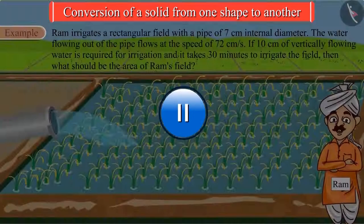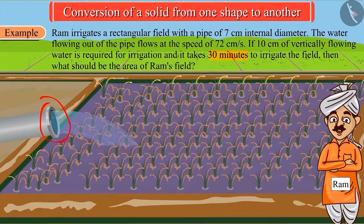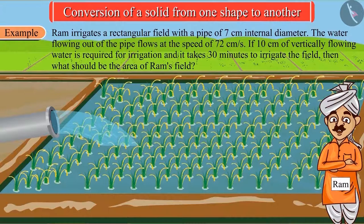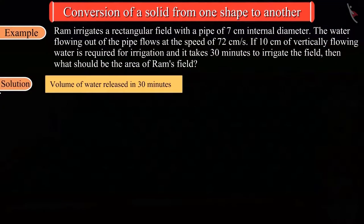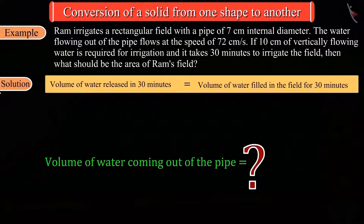We know that the pipe fills the field in 30 minutes, so we can say that the volume of water coming out of the pipe in 30 minutes is equal to the volume of water filled in the field in 30 minutes. Can you calculate the volume of water coming out of the pipe in 30 minutes?